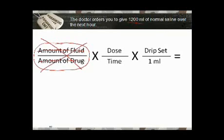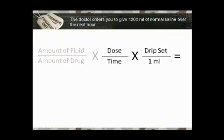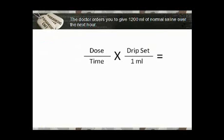We actually don't need that part of the equation. I'm going to modify things here. This is our formula: all we have is a dose over time and a drip set. That's all we need.